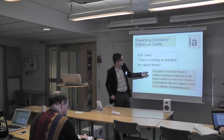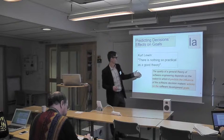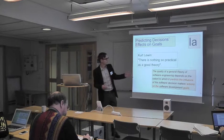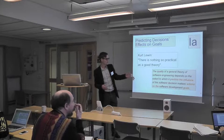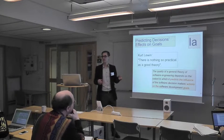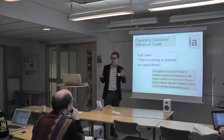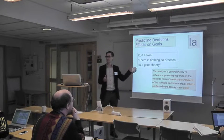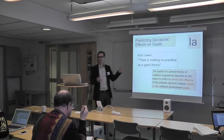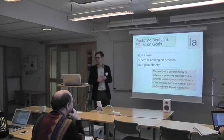So the first version of our first criterion is this: the quality of a general theory of software engineering depends on the extent to which it predicts the influence of the software decision maker's actions on the software development goals. The software decision maker has some knobs to turn — if you can turn those knobs to achieve your goals, if that can be predicted, then that's a good thing.